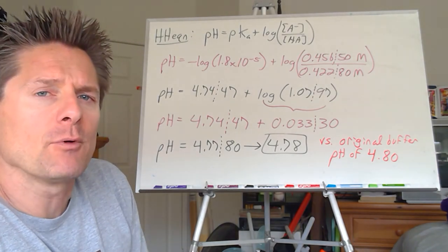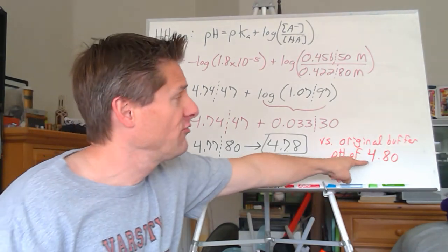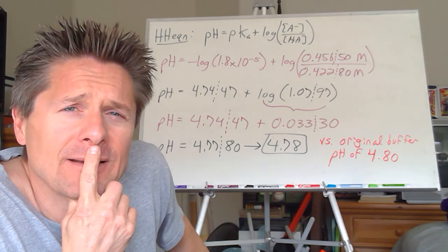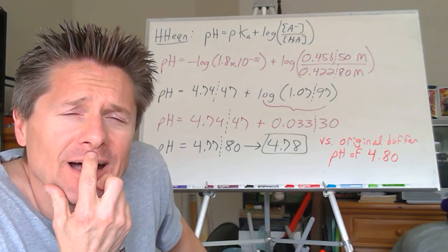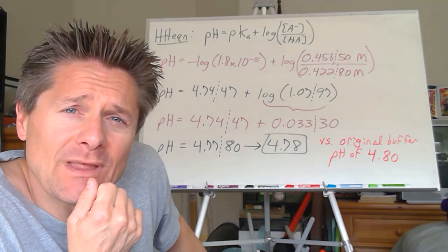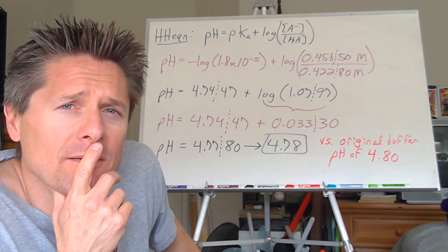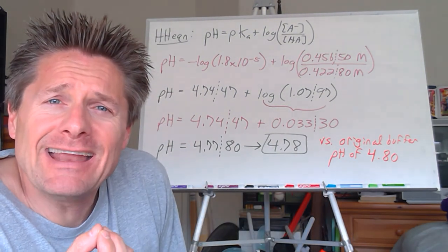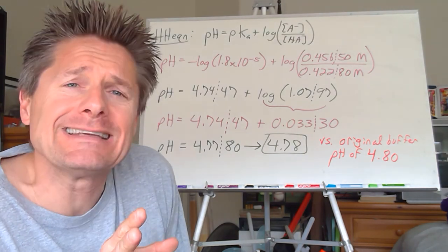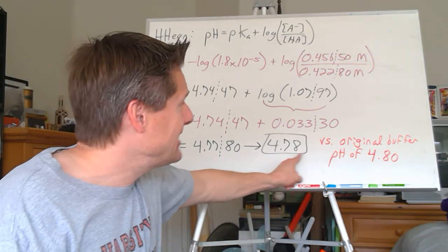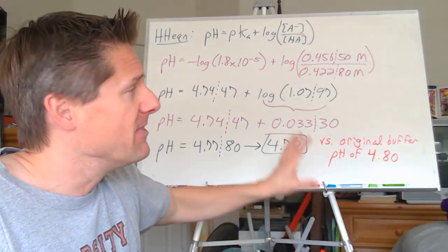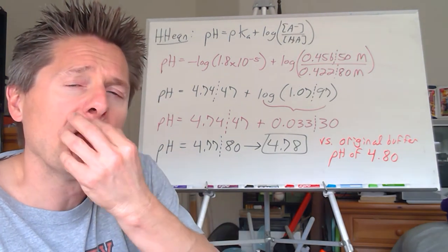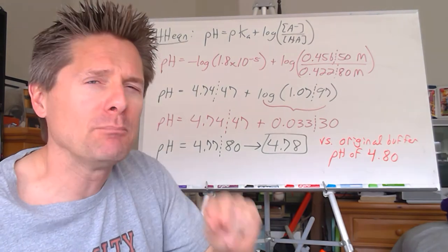Comparing: the original buffer pH was 4.80. We added 10 mL of a fairly concentrated strong acid, which would just kill the pH of water. But the buffer's pH dropped by only 0.02 pH units — from 4.80 to 4.78. Buffers don't prevent a change in pH, but they certainly minimize it. This is why you're alive — the buffers in your system are phenomenal.